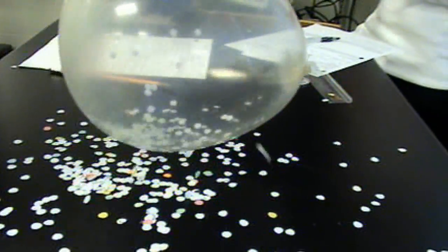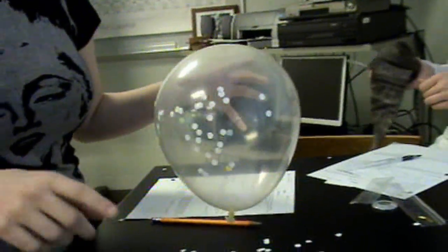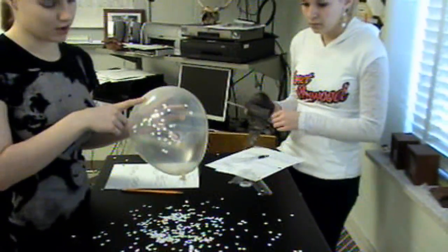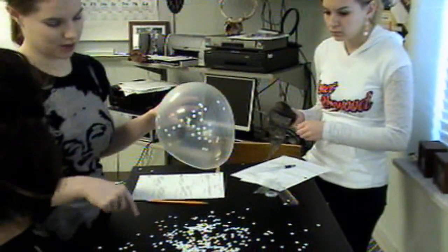Anyways, so they're being attracted. And it's the same thing. And then what happens when they touch it? The electrons move from the balloon to the paper. The paper becomes all over more negative, so it jumps back down.